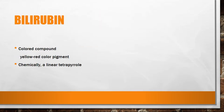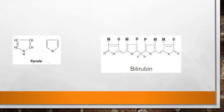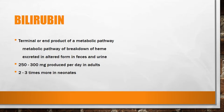Bilirubin is a colored compound which is yellow in color, and chemically it is a linear tetrapyrrole. This is a pyrrole ring, and if we combine four of them in a linear pattern we get bilirubin. Bilirubin is a terminal end-product of the metabolic pathway of heme breakdown.